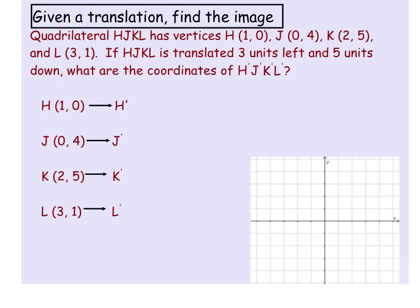This example will give you a better idea of what a translation looks like. We have four ordered pairs: H, J, K, and L. We are going to translate these four points to the left three units and five units down. The rule is: all of the x values are going to be shifted to the left three, which means subtract three, and all of the y values are going to be shifted down, so that's y minus 5.